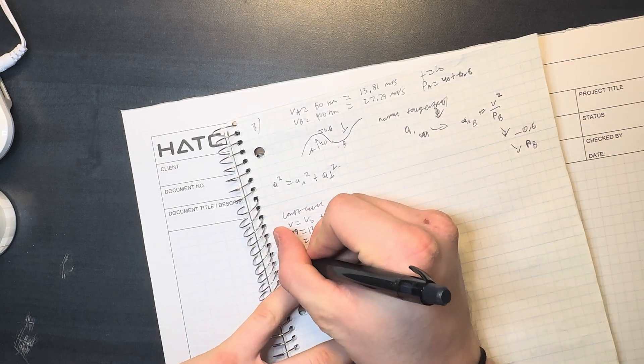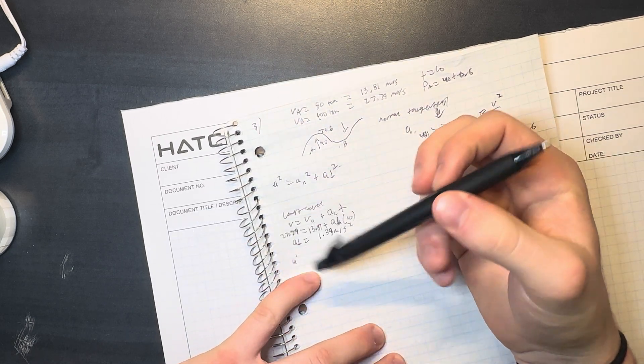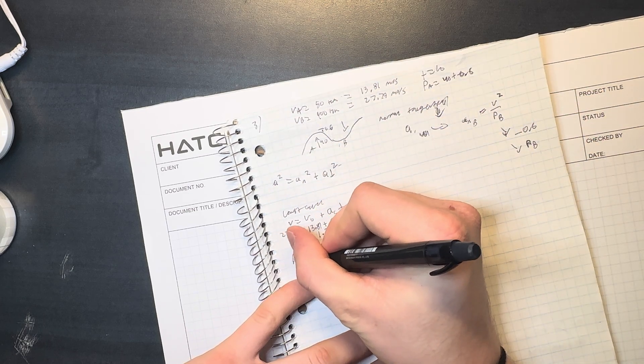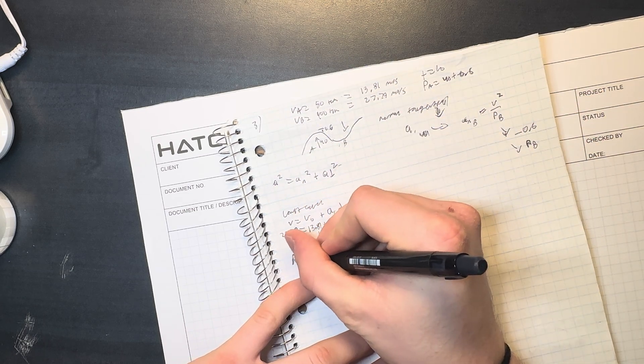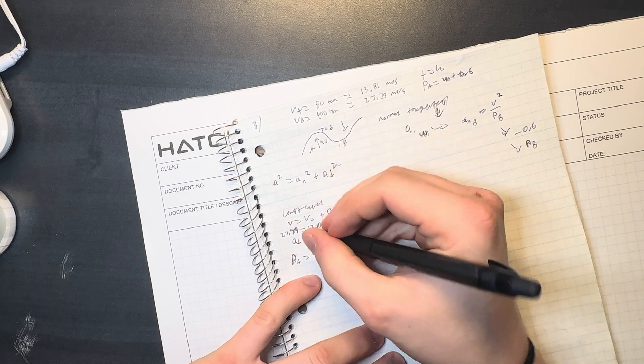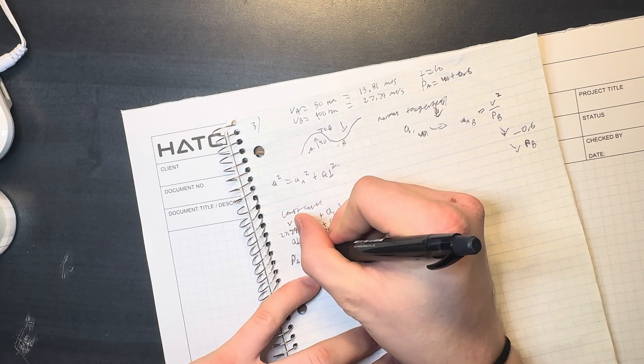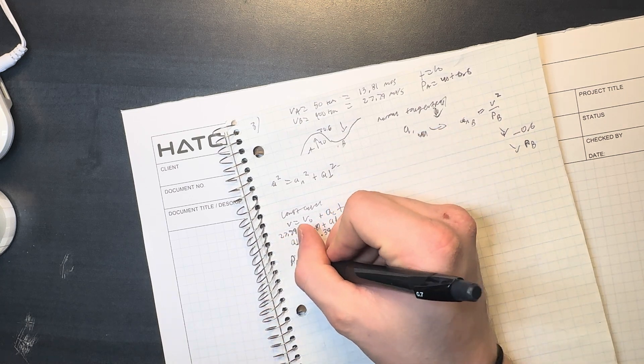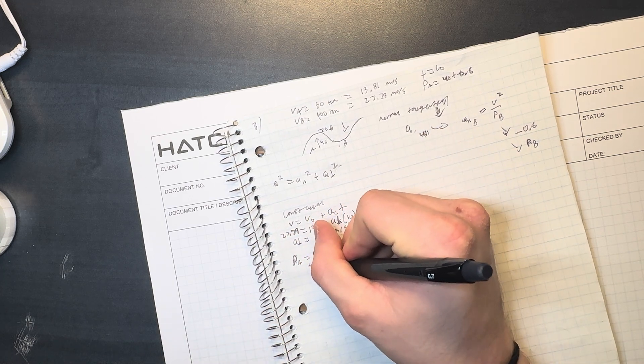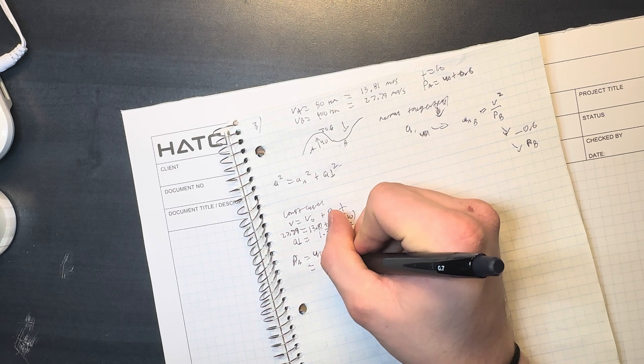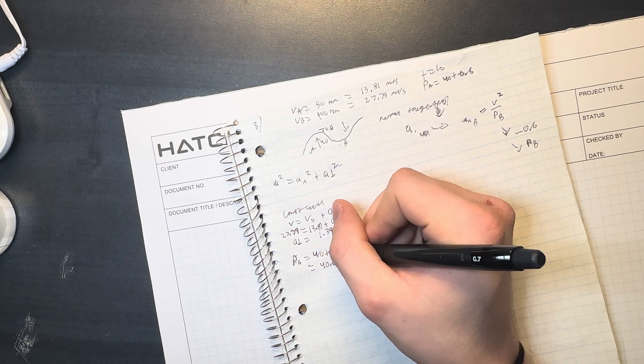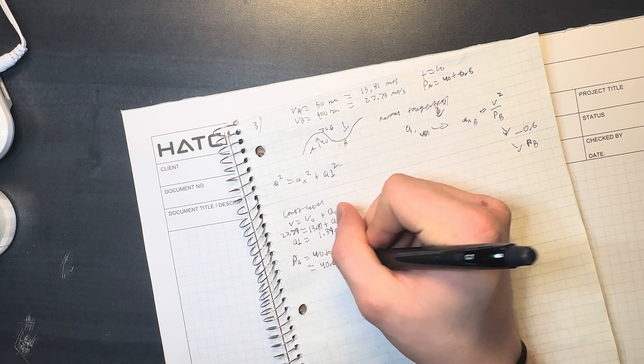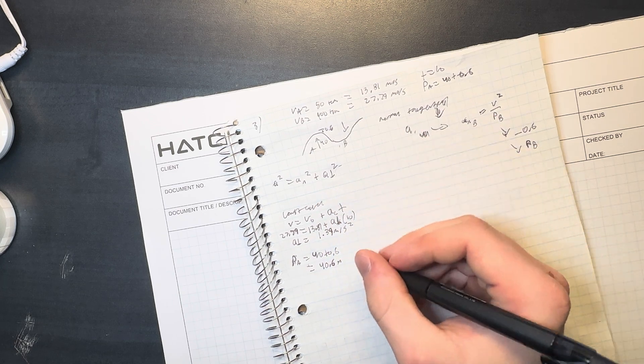So now we can use this formula. We need to find radius first, but I already did that up here. But I'll just show, so ρ, the radius ρ is the radius of A equals 40 plus 0.6. I'm gonna guess it's 40.6 meters.